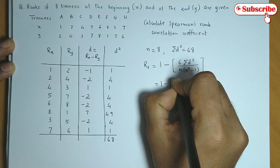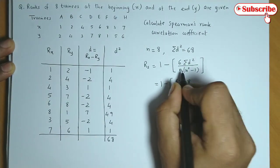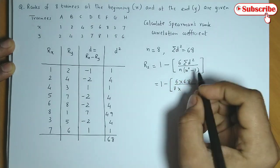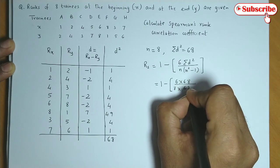Let us substitute. So we have 6 times summation d square is 68, n is 8, then 8 square, 64 minus 1. So yeh ho jata hai 63.